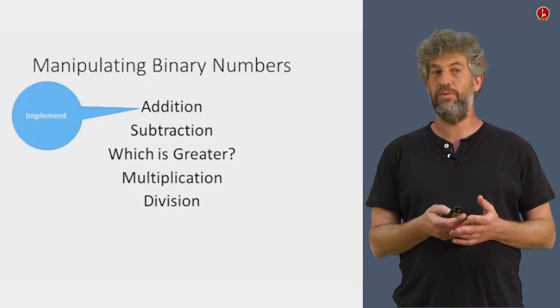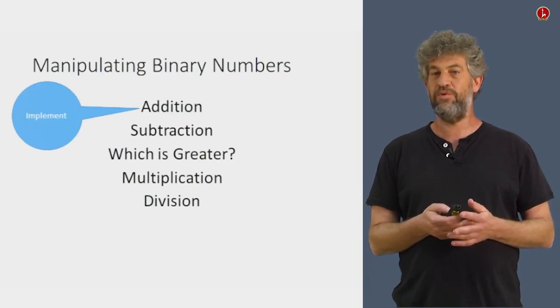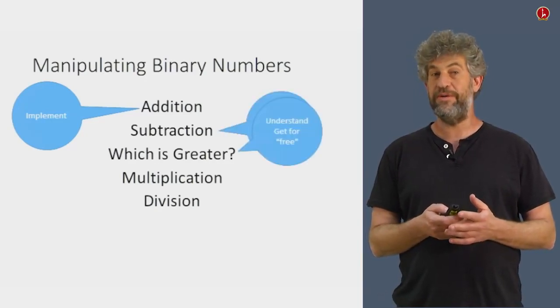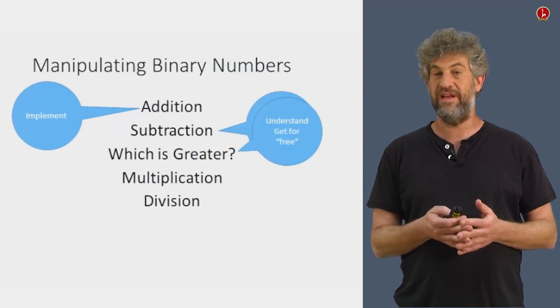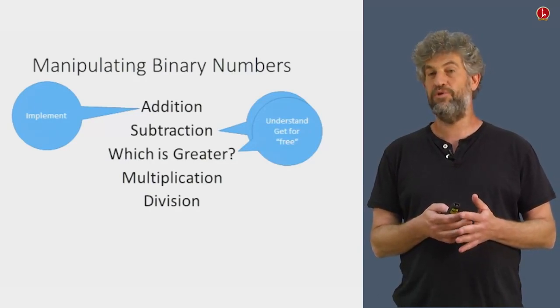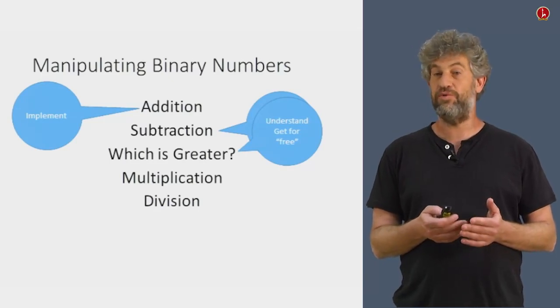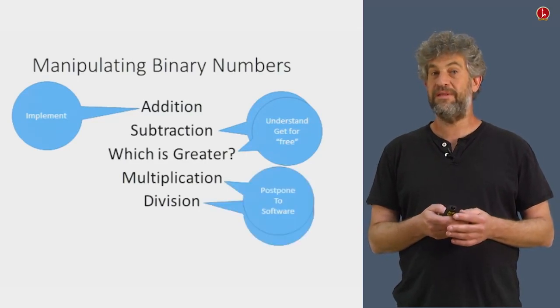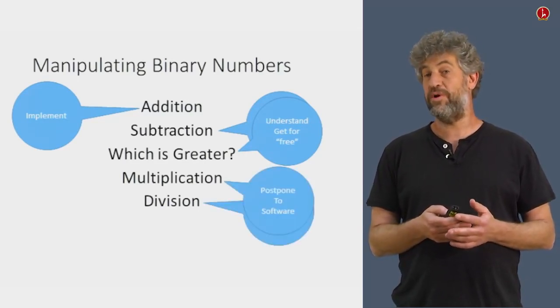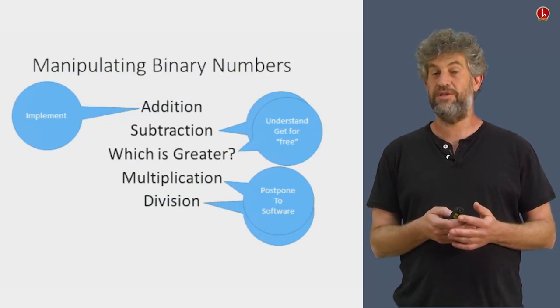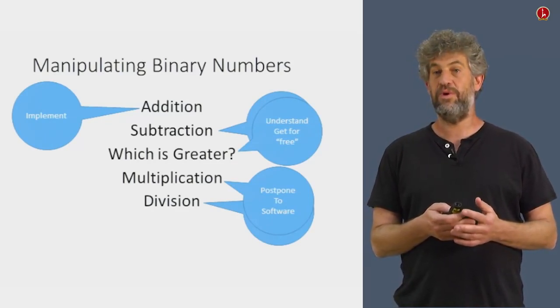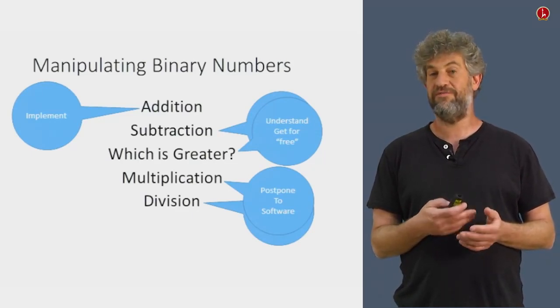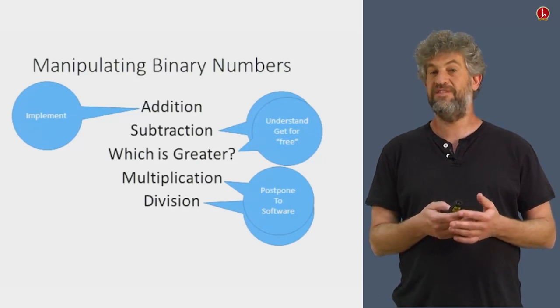Well, not all of them. What we will really be talking about is how to add. Once we do that, we'll basically get the whole rest, all the other operations almost for free. It turns out that once we understand how to represent negative numbers, which we will do in next unit, we will be able to get subtraction for free and to understand which of two numbers is greater for free. Multiplication and divisions are more complicated. But nicely enough, we can actually postpone them to software. We will not build in hardware any multiplication or division circuitry. But rather, we will actually let software do it. And things are much easier to do in software because you just have to write little programs rather than actually connect stupid little devices.